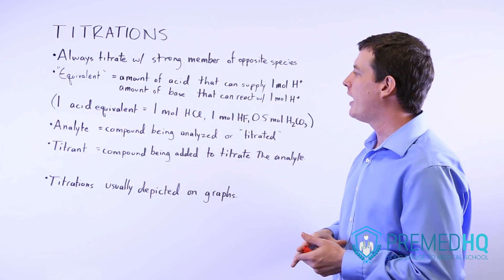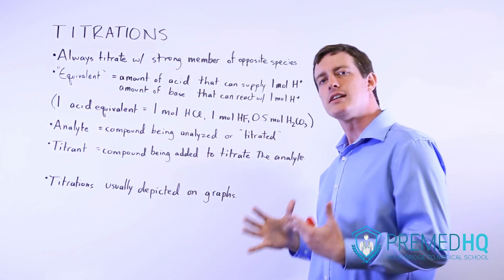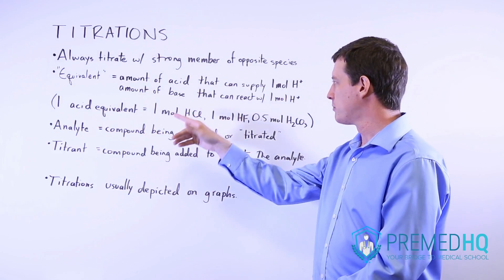So if you have one mole of HCl, that is considered an acid equivalent, because that will yield one mole of protons.